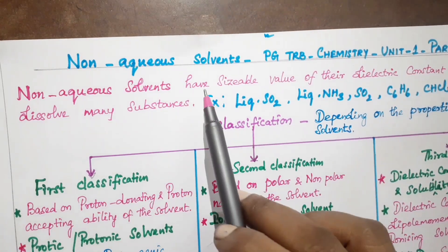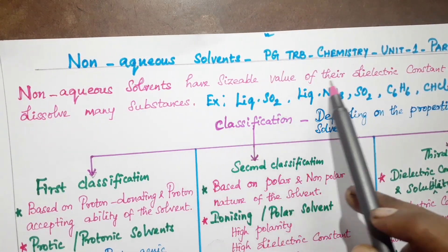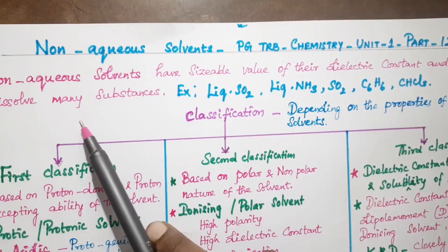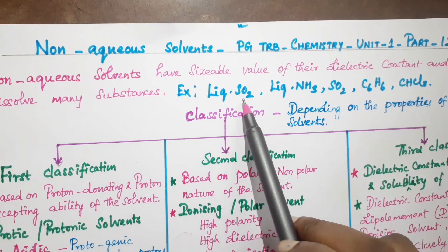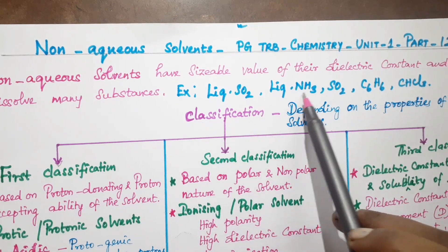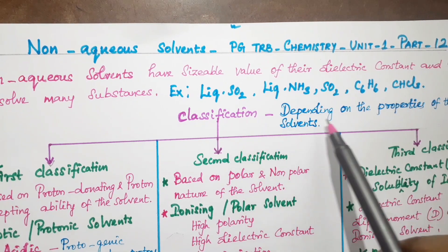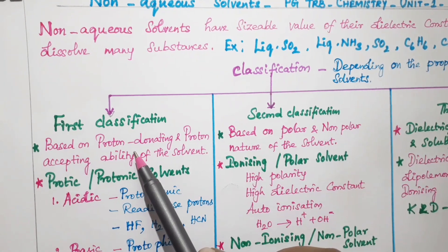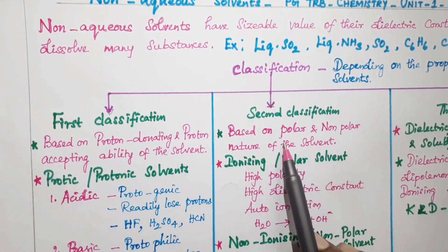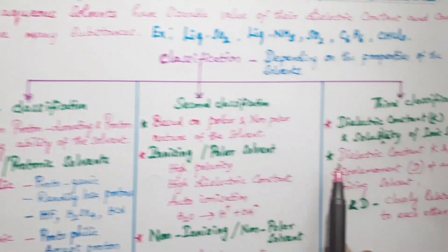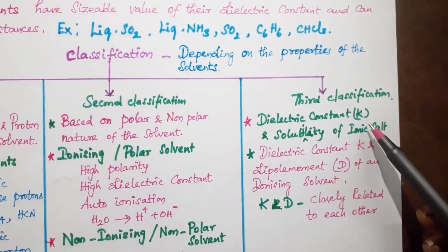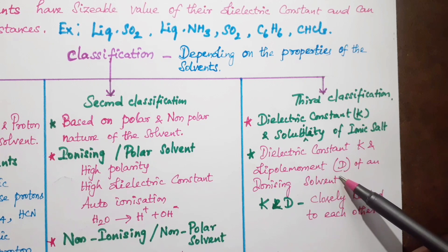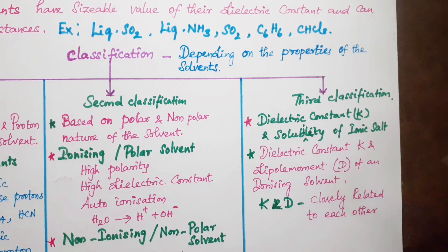To summarize: non-aqueous solvents have a dielectric constant value and dissolve many substances — examples include liquid sulfur dioxide, ammonia, benzene, and chloroform. Classification is based on: first, proton-donating ability; second, polar vs. non-polar nature; and third, the relationship between dielectric constant, solubility, and dipole moment.